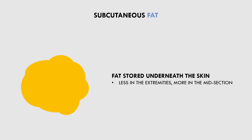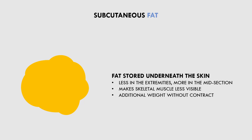In terms of body composition, subcutaneous fat basically covers skeletal muscle, making each muscle less defined. It also contributes to overall body mass without any contractile function, making it usually undesirable for most athletes. Along with skeletal muscle, subcutaneous fat is one of the most important variables relating to body composition.